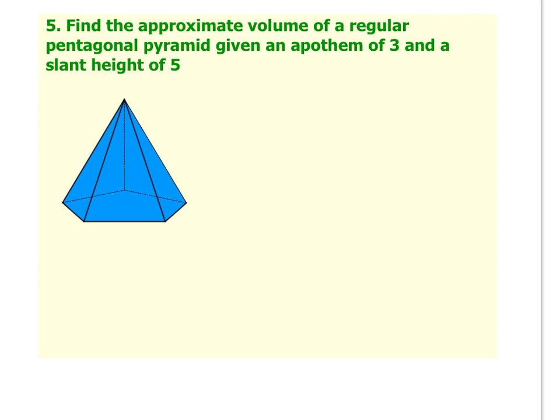Number five is a little bit tricky. Find the approximate volume of a regular pentagonal pyramid given an apothem of three and a slant height of five. So again, I'm going to start my problem by writing out the volume formula. 1 third times the area of the base times the height. In this case, because we are working with a base that's a pentagon, we're going to have to do 1 half times apothem times perimeter. And then we're going to have to multiply by the height of the pyramid, which leads to our first issue.